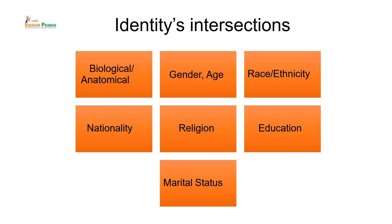When I say intersectionality of identities, I mean the broad variables that inform a person's or a group's social dynamic attributes — starting with the biological, which is mostly anatomical: gender, age, race, ethnicity, nationality, religion, education, marital status, etc. Each of these attributes informs a person's identity and, as you can imagine, would inform the way a viewer looks at a particular image. It is all the more important to acknowledge these nuances in order to understand spectatorship.